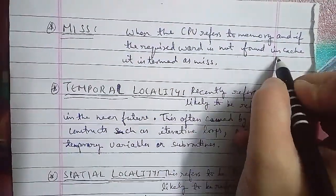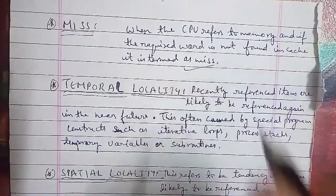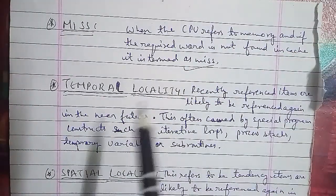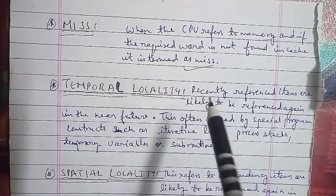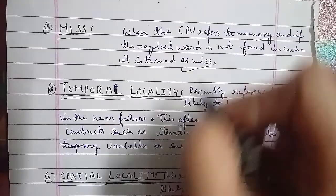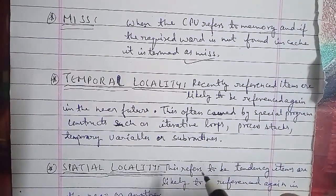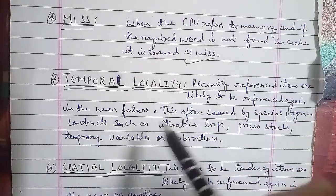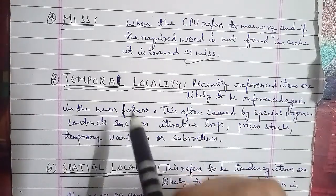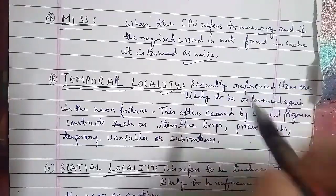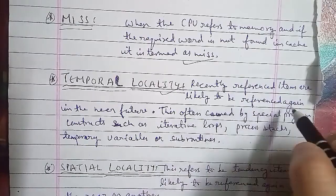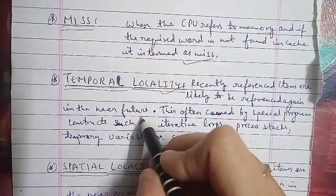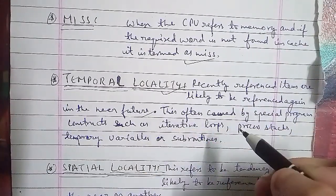Temporal locality: recently referred items are likely to be referred again in the near future. This is often caused by program constructs such as iterative loops, process tags, temporary variables, or subroutines.